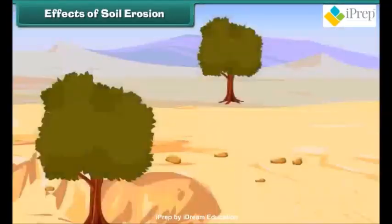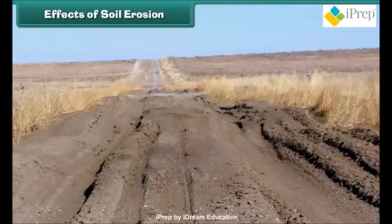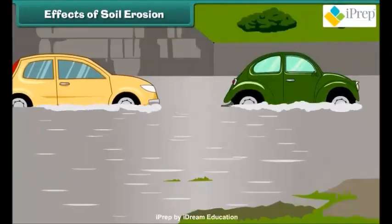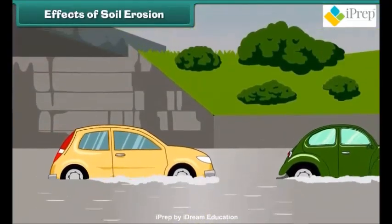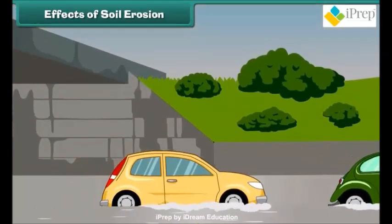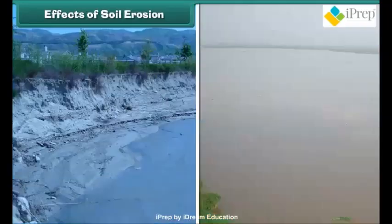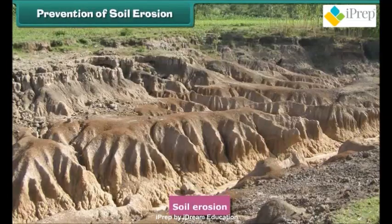Soil erosion affects natural vegetation badly, which leads to the transfer of fertile land into desert. Due to soil erosion, soil shifts and accumulates on roads and streets, blocking driving and resulting in accidents. It also blocks many irrigation canals, increases the risk of flooding, and eroded soil deposits in water resources like rivers and lakes, polluting them.